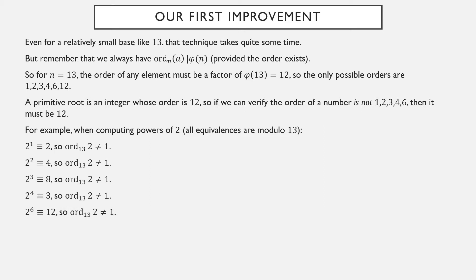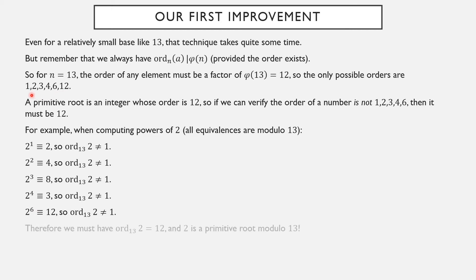However, I don't really need to compute 2 to the fifth. Why not? Because the order can't possibly be 5 anyway — it's got to be 1, 2, 3, 4, 6, or 12. So I compute 2 to the sixth as, for example, 2 to the fourth times 2 squared: 3 times 4 is 12, not equivalent to 1, so the order is not 6. Well, if the order isn't 1, 2, 3, 4, or 6, but it had to be in this list, it's got to be 12. So I can stop computing now. The order must be a positive factor of 12 but it wasn't 1, 2, 3, 4, or 6, so the order has to be 12, and 2 is a primitive root.